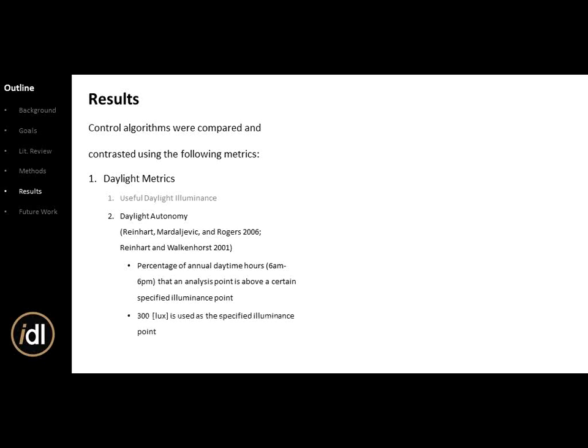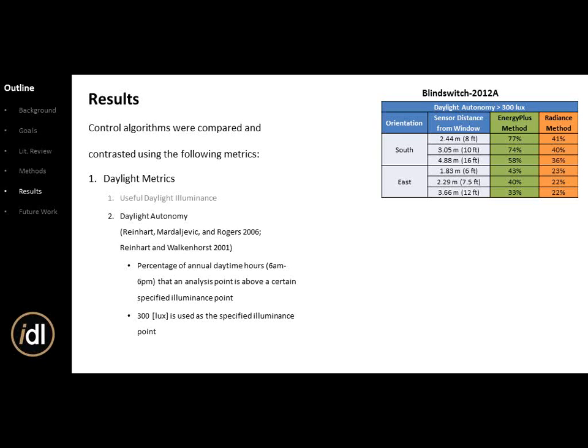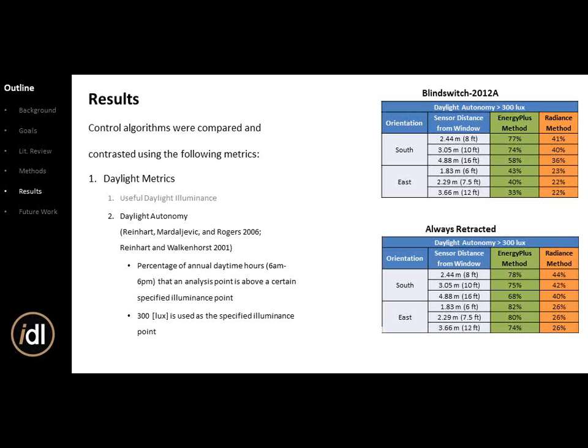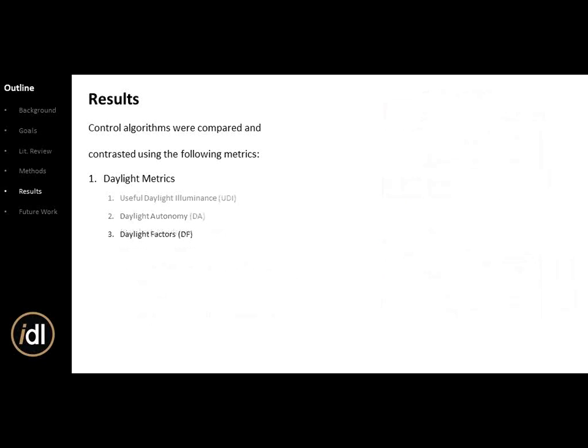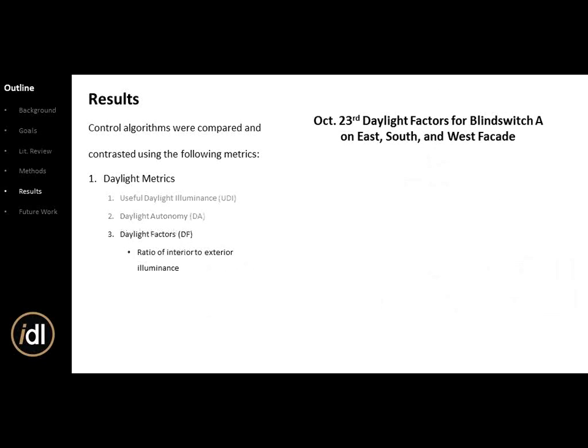Daylight autonomy is the annual percentage of daytime hours that a sensor point exceeds a certain luminance value. We used 300 lux — about 30 foot-candles — which is standard for an office setting. Results for 2012-A and always retracted again show EnergyPlus significantly over-predicts interior illumination values compared to Radiance.